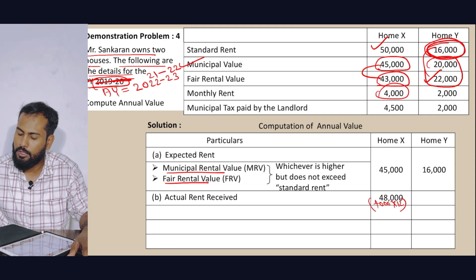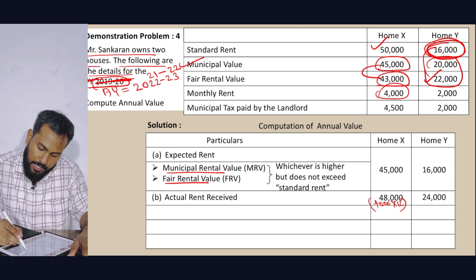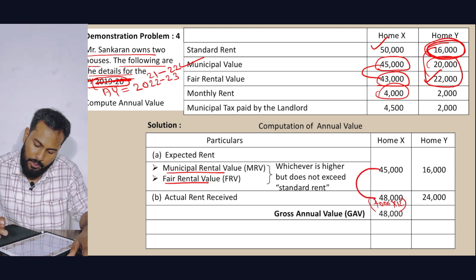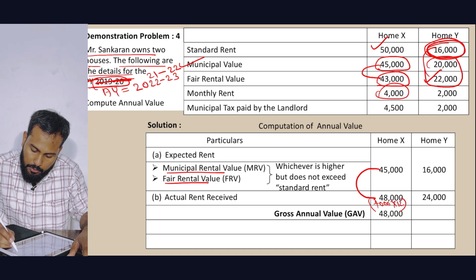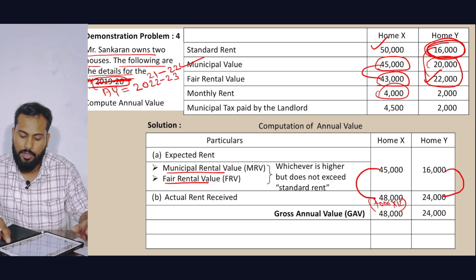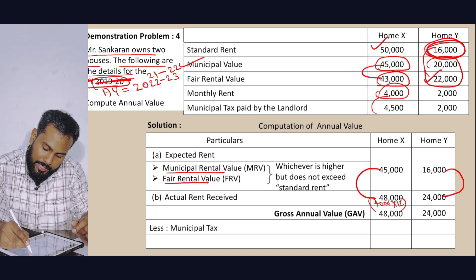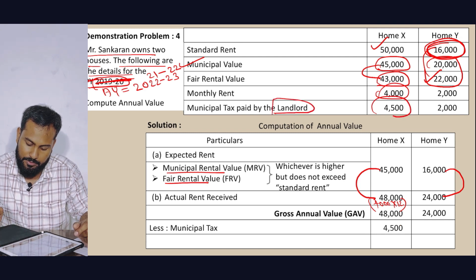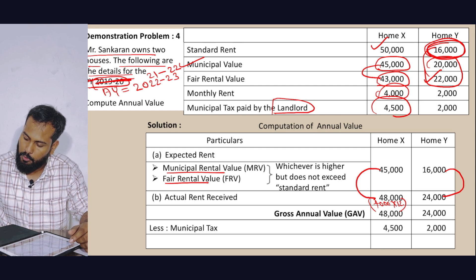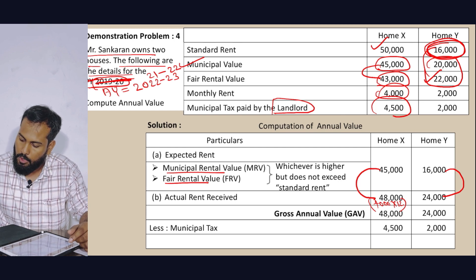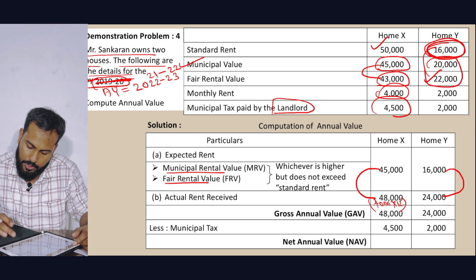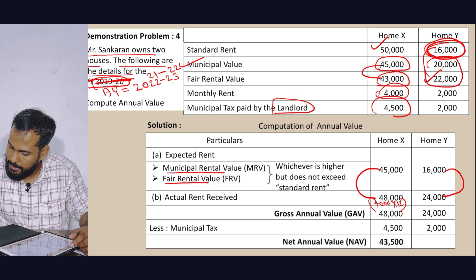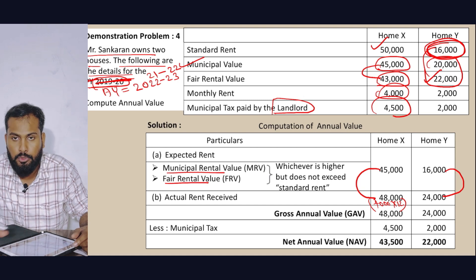For House Y, actual rent is 2,000 × 12 = 24,000. Gross Annual Value is the higher of Expected Rent or Actual Rent — so House X GAV = 48,000 and House Y GAV = 24,000. Less Municipal Tax paid by landlord: House X 4,500 and House Y 2,000. Net Annual Value: House X = 48,000 − 4,500 = 43,500; House Y = 24,000 − 2,000 = 22,000.